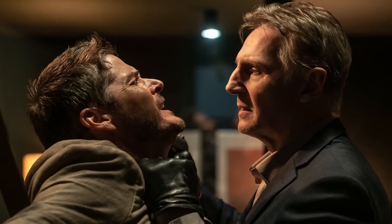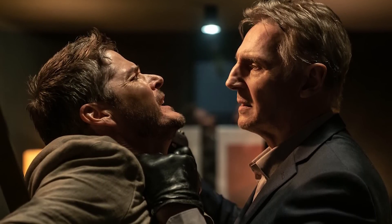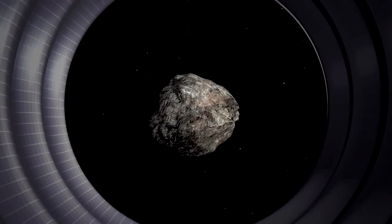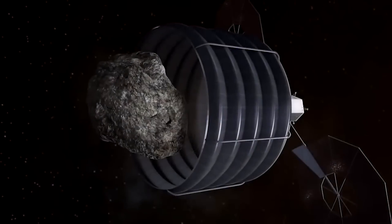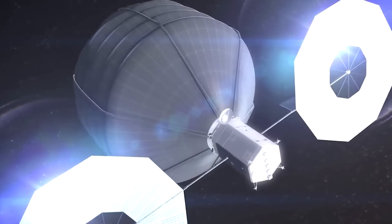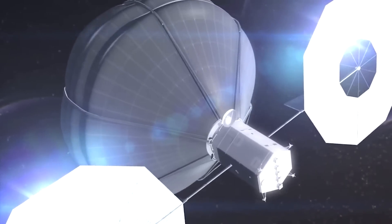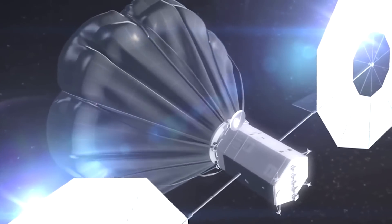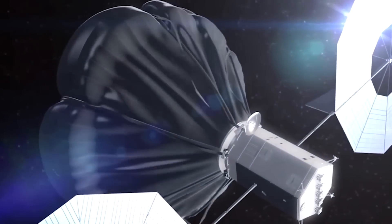So instead, we throw a bag over its head and kidnap the asteroid like a Liam Neeson movie. The retrieval craft is going to unfurl a giant containment bag that will envelop the space rock. Once inside, the bag is going to contract and tighten around the asteroid, pulling it in tight to the craft.